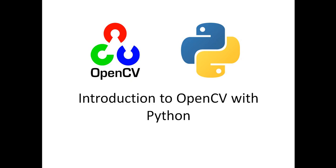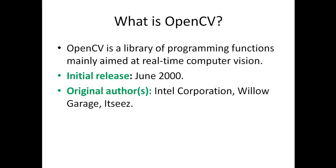Before, OpenCV was just restricted to image processing operations. Now we can use artificial intelligence-based operations on OpenCV as well. OpenCV is a library of programming functions mainly aimed at real-time computer vision — it has inbuilt or ready-made functions for image processing and computer vision operations. The initial release was around June 2000, so it is almost 20 years old. It was written for C++ and was developed by Intel Corporation as well as Willow Garage and ITC, who are the co-creators of OpenCV.